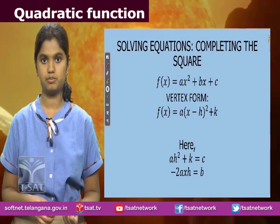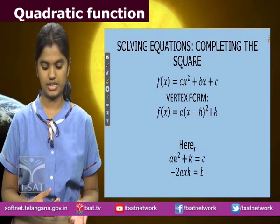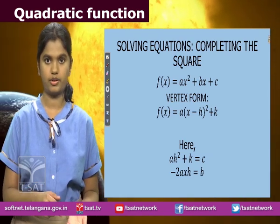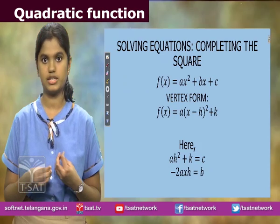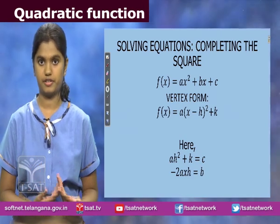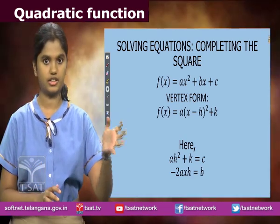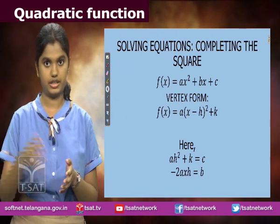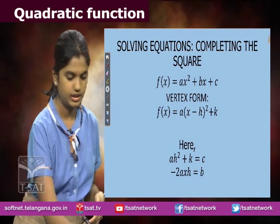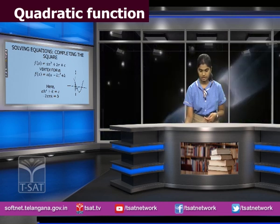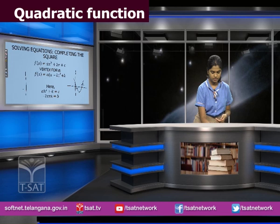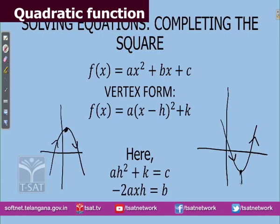The vertex form is another important way to demonstrate a quadratic function, written as a(x − h)² + k. In a quadratic function, h and k always depict the vertex, which is also known as the turning point of the function. The turning point is when the graph goes from increasing to decreasing, or decreasing to increasing. The turning point is visible here — it goes from decreasing to increasing, and can also go from increasing to decreasing. The coordinates of the vertex are (h, k).